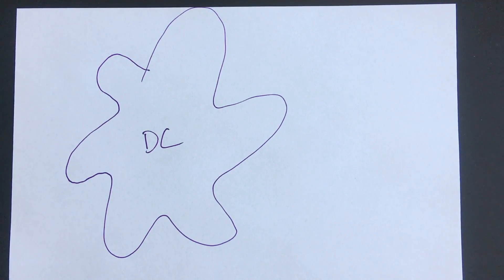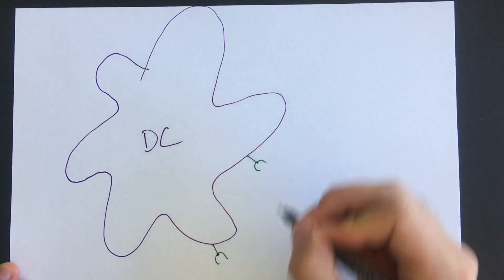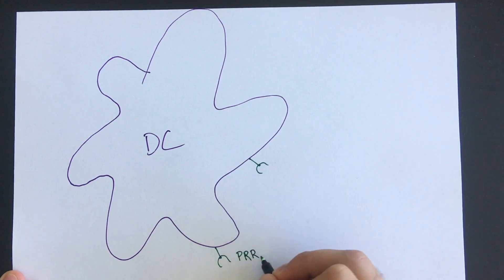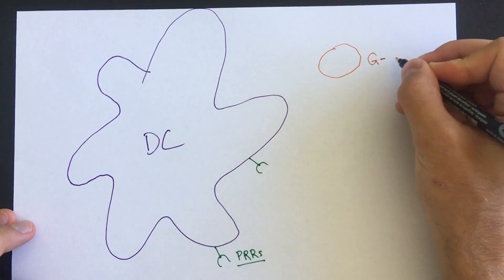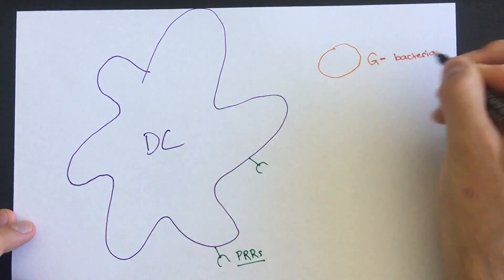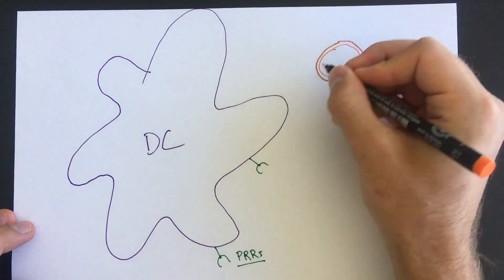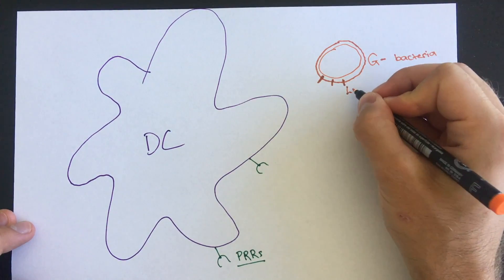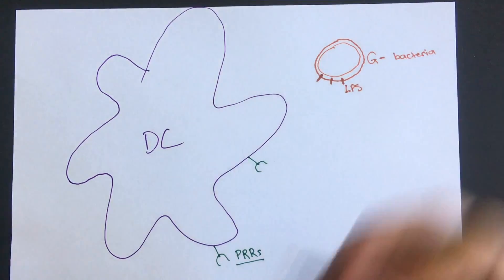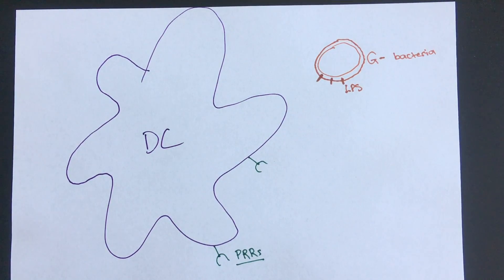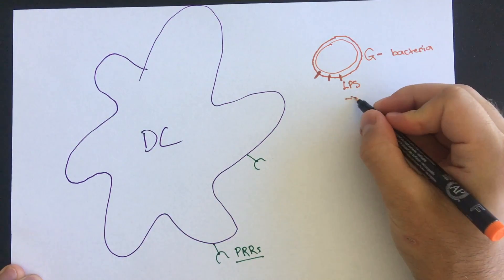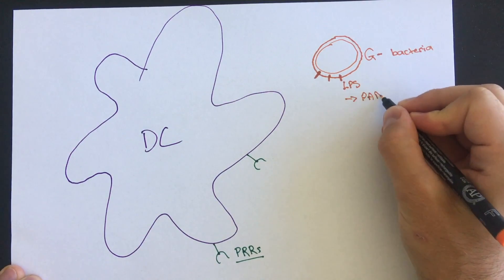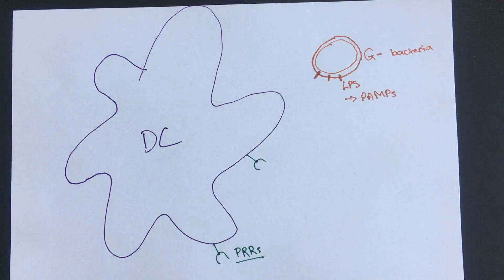Dendritic cells respond quickly to these signals because they are equipped with pattern recognition receptors or PRRs. Pattern recognition receptors respond to conserved molecular patterns shared amongst groups of microorganisms. These are called pathogen associated molecular patterns, commonly known as PAMPs. For example, if a gram-negative bacteria invades the area, within the cell membrane is a molecule called lipopolysaccharide or LPS. Lipopolysaccharide is a potent PAMP found in all gram-negative bacteria.